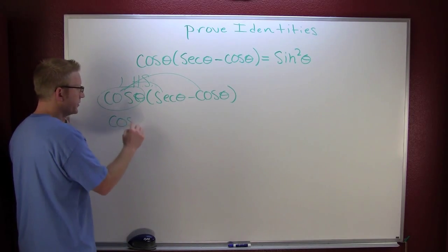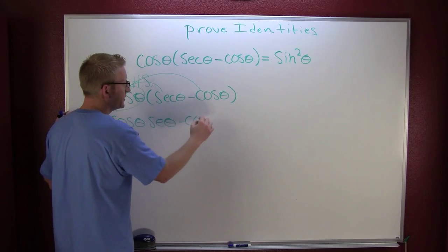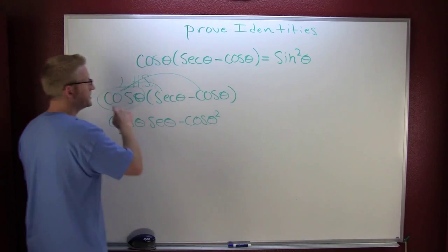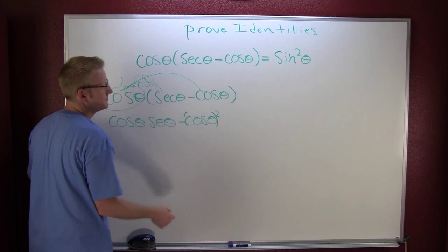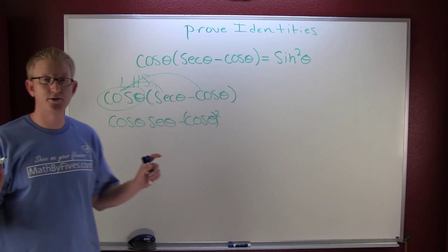This is the cosine theta secant theta minus the cosine theta squared. Because it's cosine times cosine. Cosine squared. Yeah. Alright. So now we think we're stuck. So what do we do?